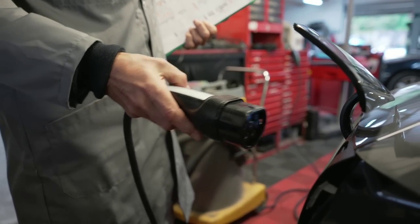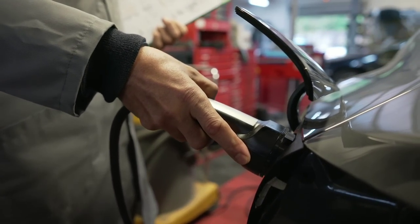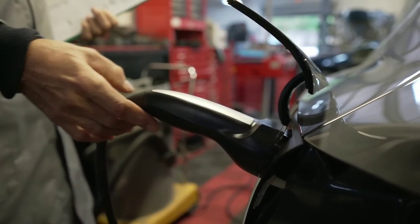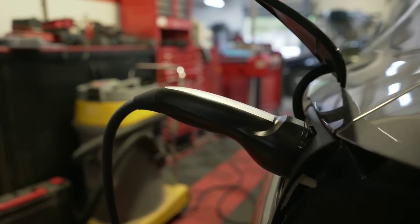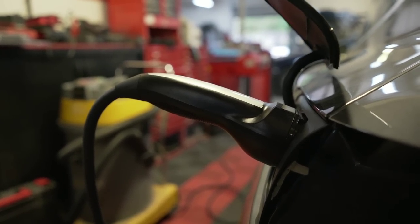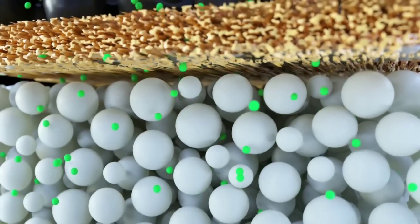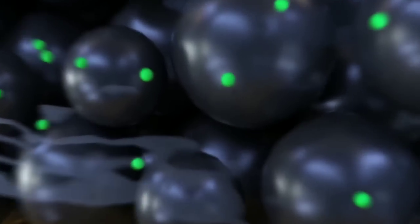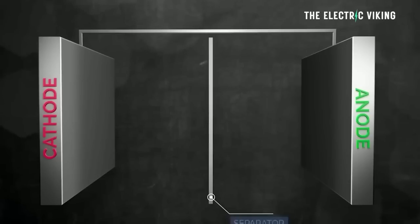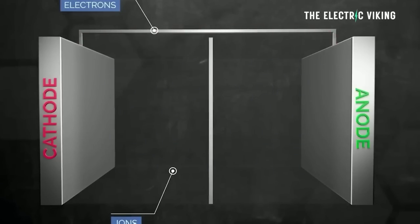When the battery is charging, lithium-ions move from the positive electrode to the negative electrode, where they combine with electrons and form metallic lithium. When the battery is discharging, the opposite happens. Lithium-ions move from the negative electrode to the positive electrode, where they react with oxygen and form lithium oxide. This process releases electrons that power the device.